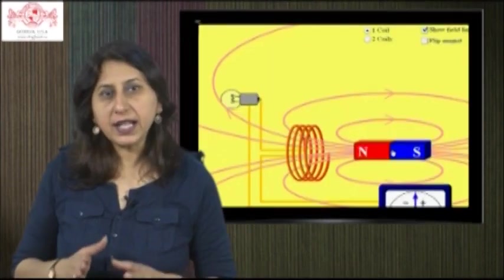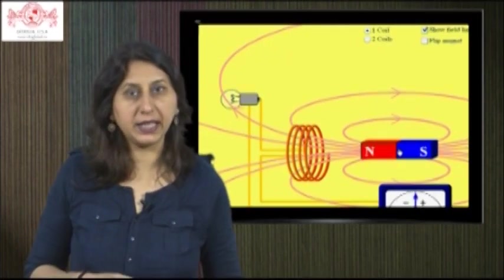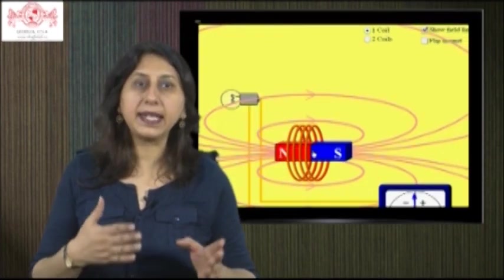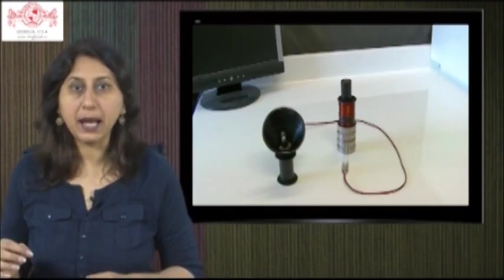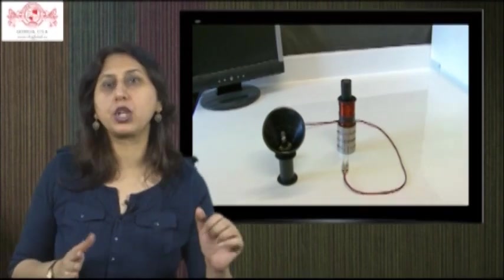Faraday's first law states that whenever a conductor cuts a magnetic field, or vice versa, an EMF is induced in it. The EMF is set up in such a direction so as to oppose the cause of it.